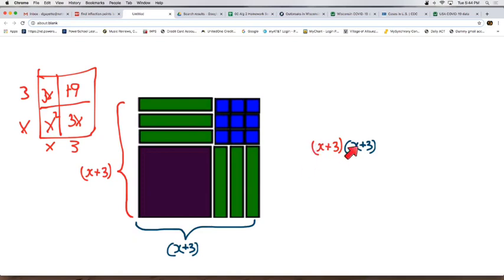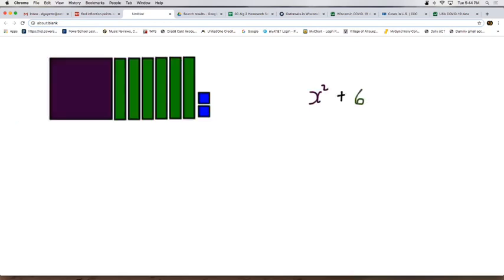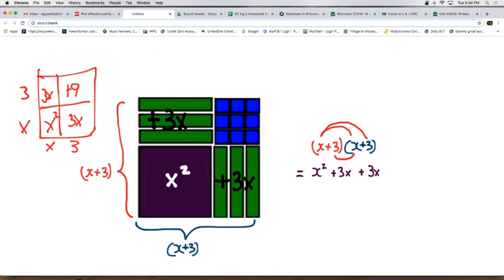Nonetheless, I wanted to show you when you foil this, the first thing you do is you multiply the x times the x. It gives you the x squared, and here's your x squared. You multiply the x times the 3. You get 3x. Here's a 3x right here. We're going to take the 3 times the x. You get another 3x. It's accounted for up top. And we've got the 3 times 3 gives us 9, and that's right here. So x plus 3 squared is equal to x squared plus 6x plus 9.